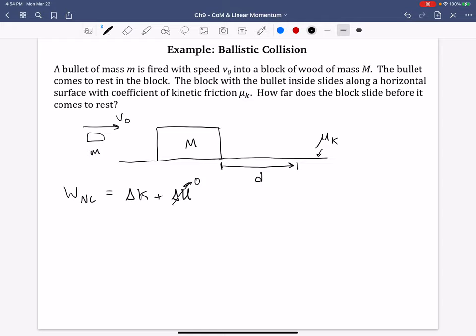That's zero, because again, this is a horizontal surface. Let's see here. The work done by friction, when the bullet is in the block, and the block is moving, we want to find that distance. What do we need? We have a force in here, we have the distance in here, in here we have mass and a speed. In fact, we have two speeds.